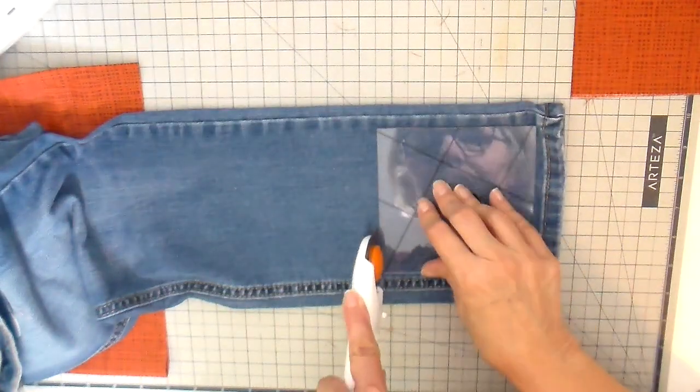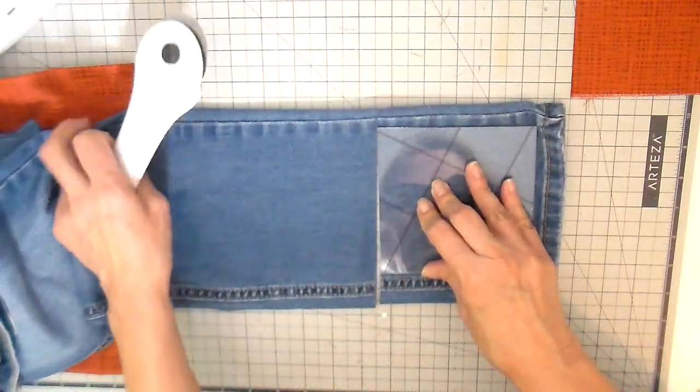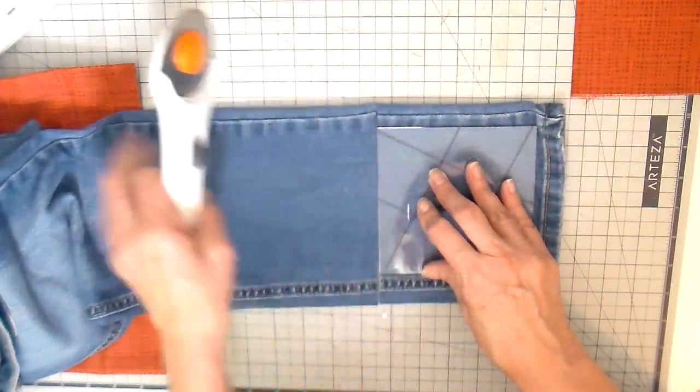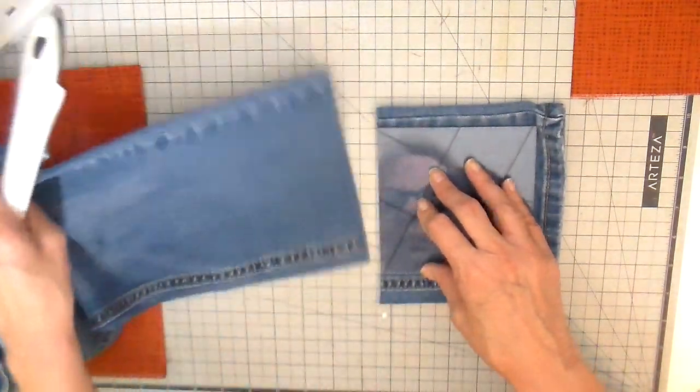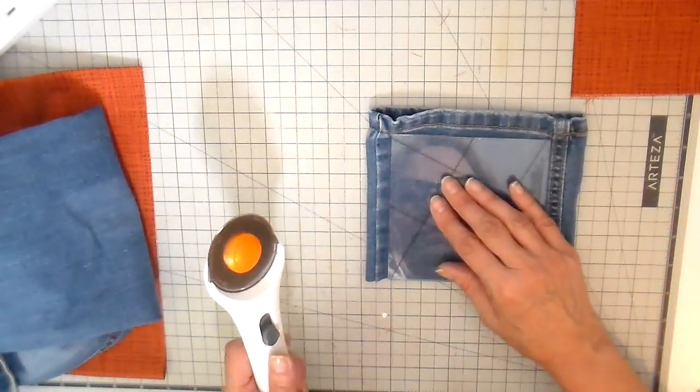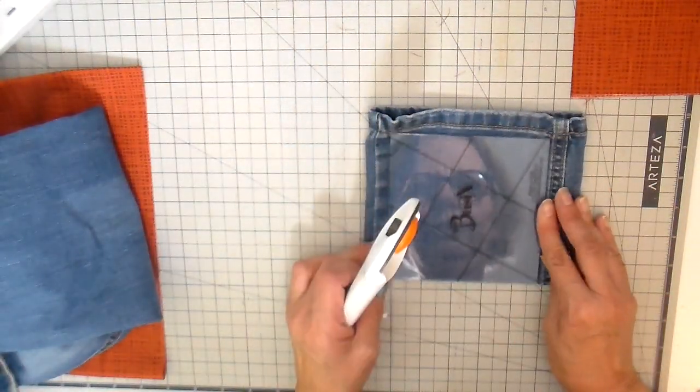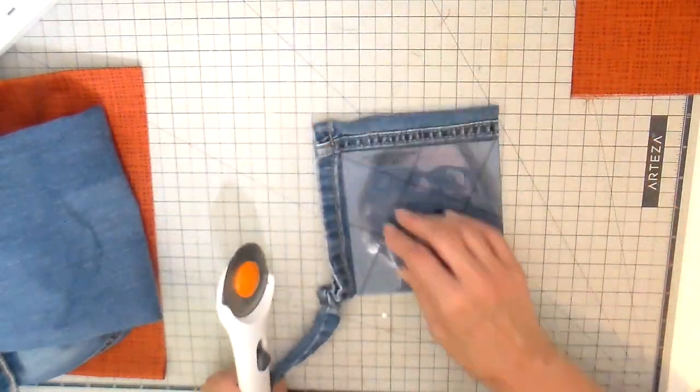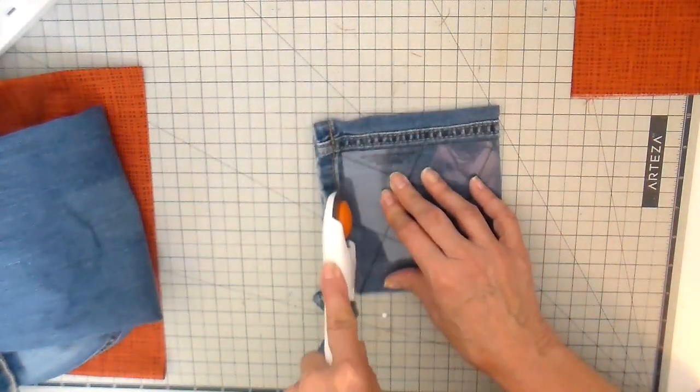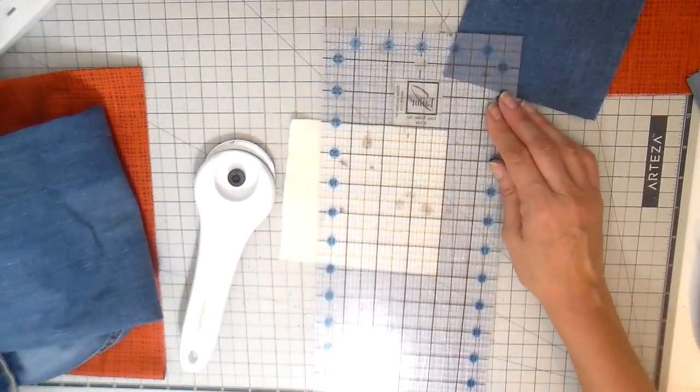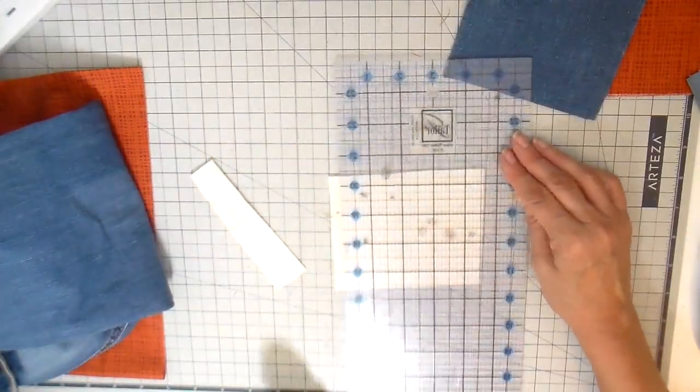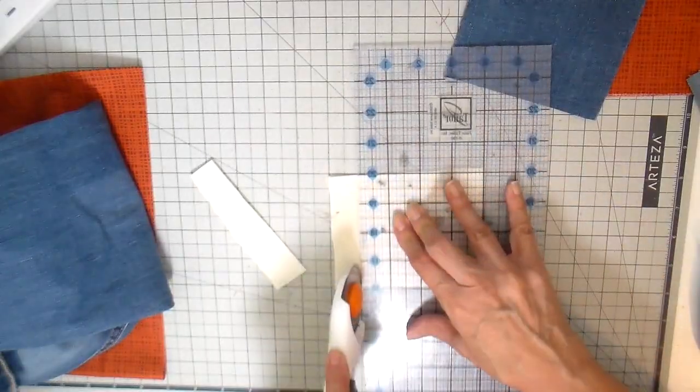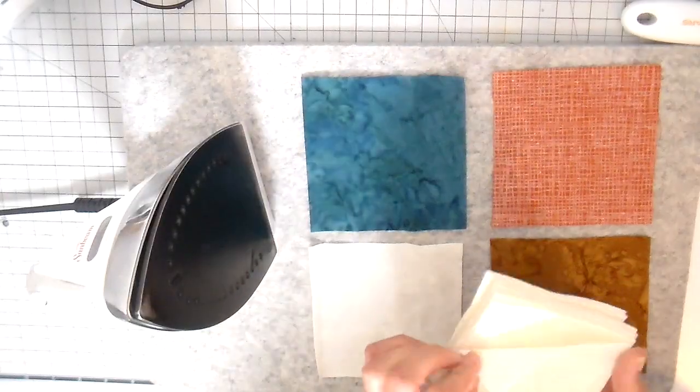For the denim, I find this five-inch ruler works really well. Just because this pants leg is irregularly shaped, it's just easier just to lay this five-inch ruler on here and then again cutting with my rotary cutter. On to the fleece, the fleece you want at four by four. The other squares are five by five.